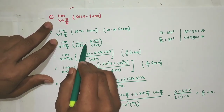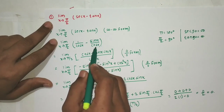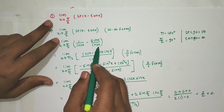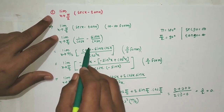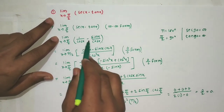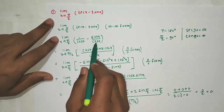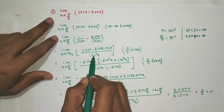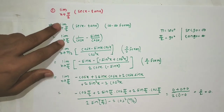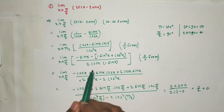Writing sec(x) = 1/cos(x) and tan(x) = sin(x)/cos(x), then taking a common denominator gives [1 - sin(x)] / cos(x). This is our 0/0 form, and we apply L'Hôpital's rule.